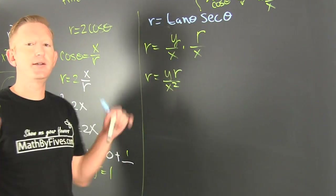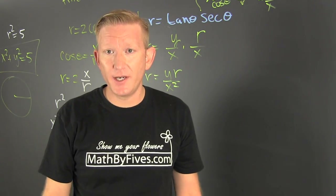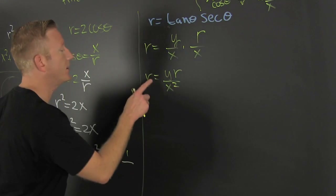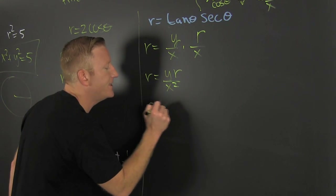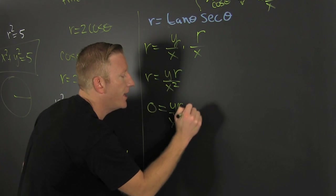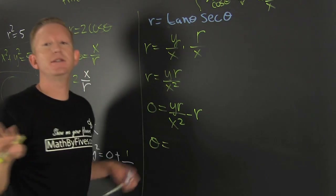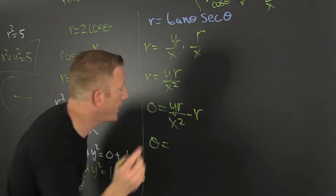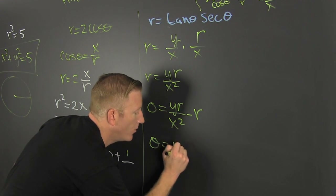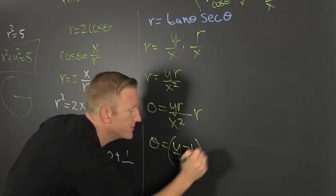I'm going to solve for zero because I don't want to divide by r — when you divide by r you could potentially lose solutions. So I get everything to one side: (y/x²)·r − r = 0. Now I factor out r: r·(y/x² − 1) = 0.